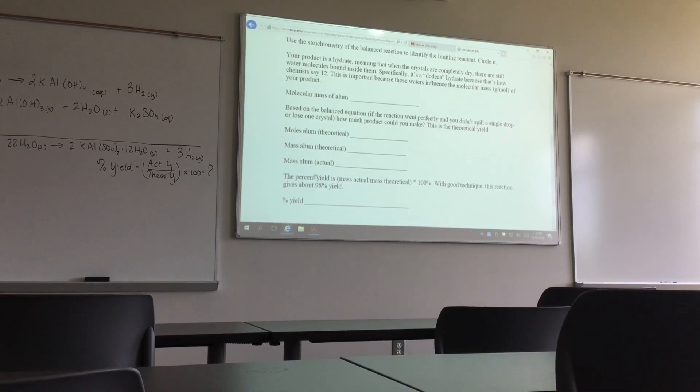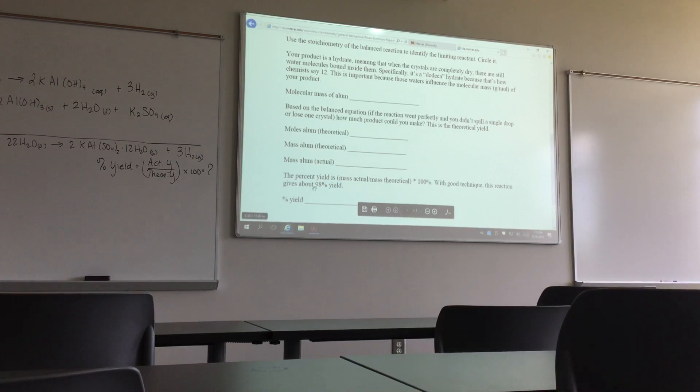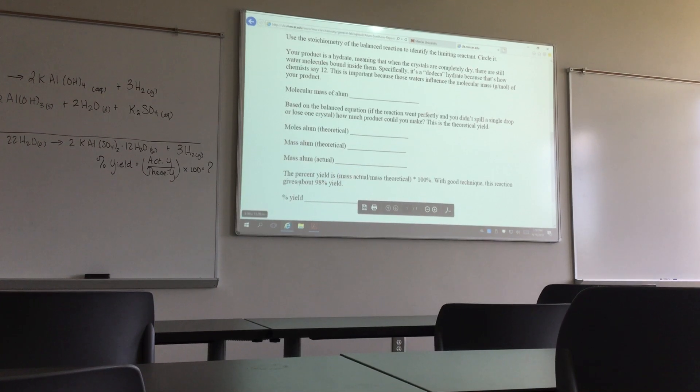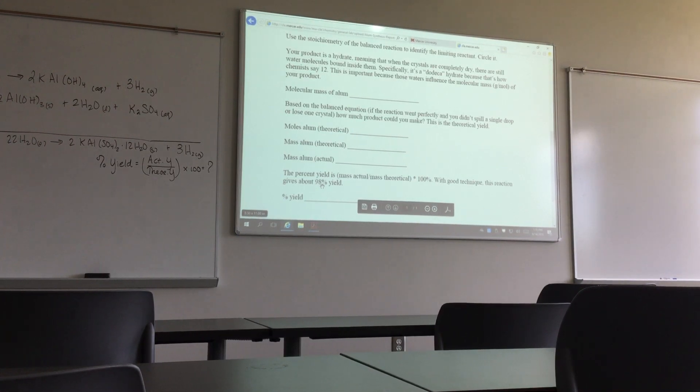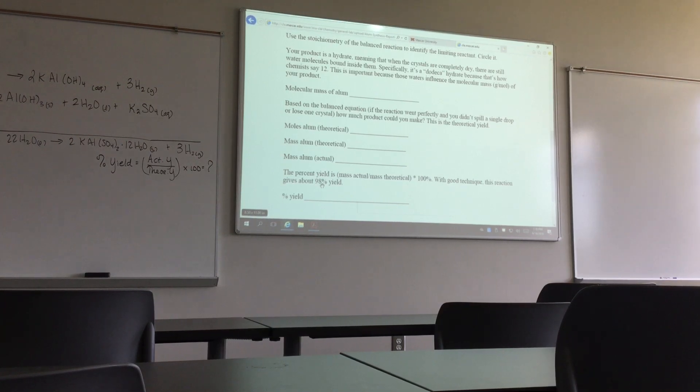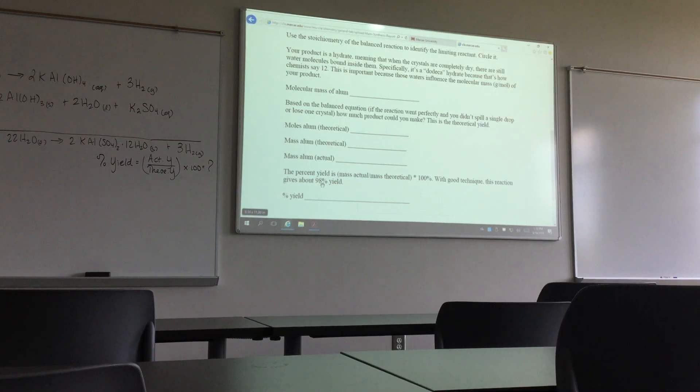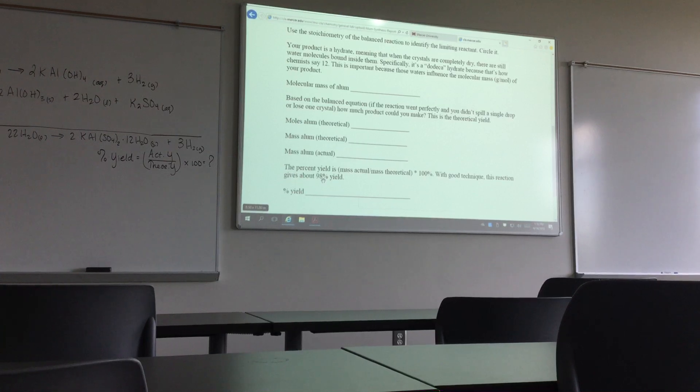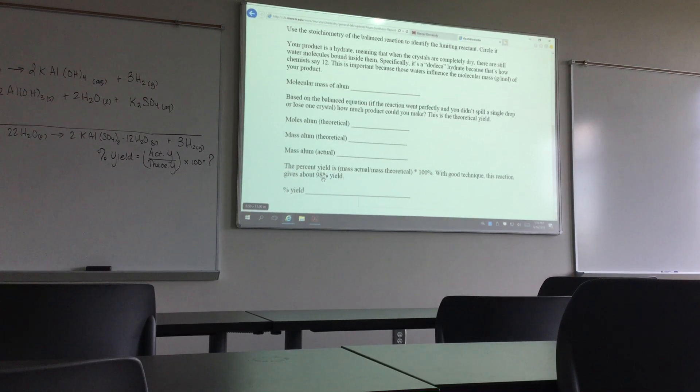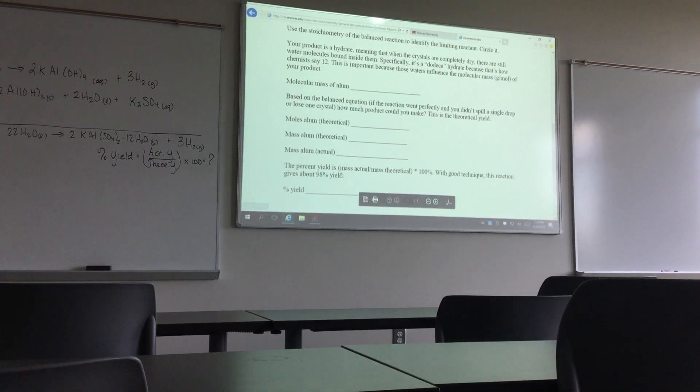Then your percent yield. Notice it says with good technique this reaction gives about 98 percent yield. You are developing chemists, so I don't expect you to have 98 percent yield. You could have greater than 98 percent, which means your sample was wet. I've seen as low as 40 percent—it just means you lost some sample. I am not grading on whether you get 98 percent yield. I am grading your calculations and understanding of how you find limiting reactants.